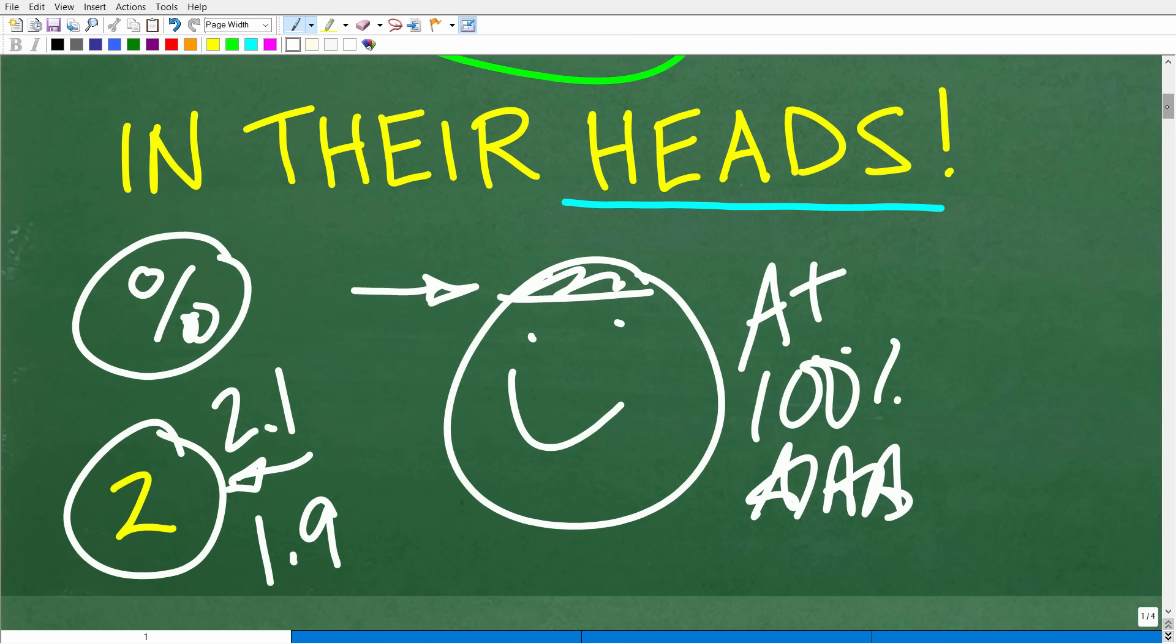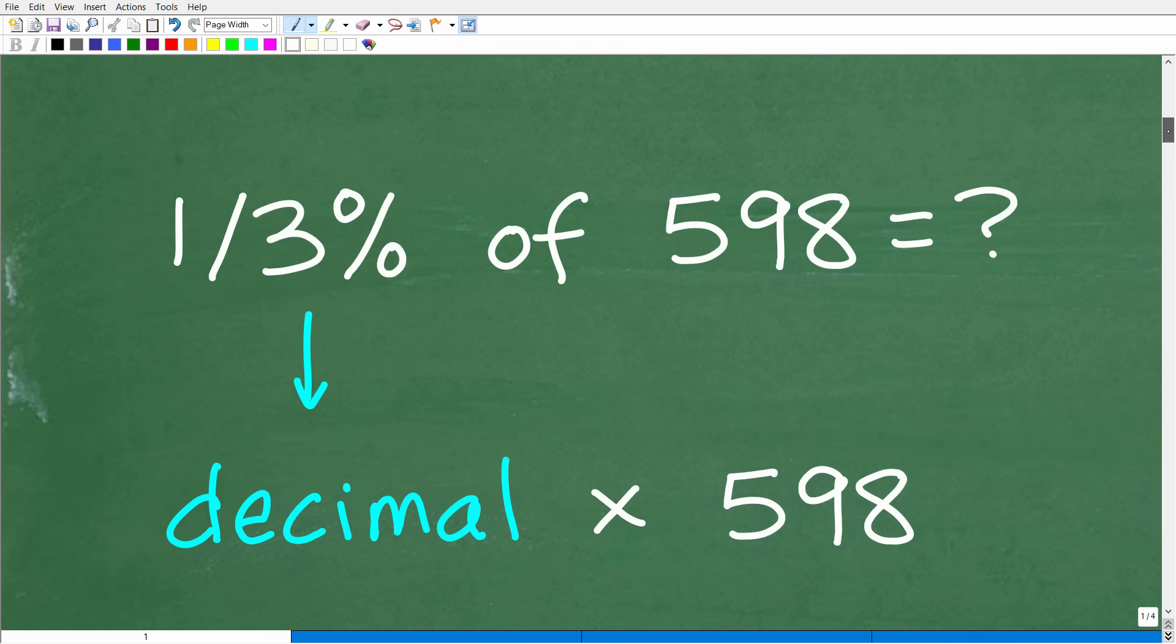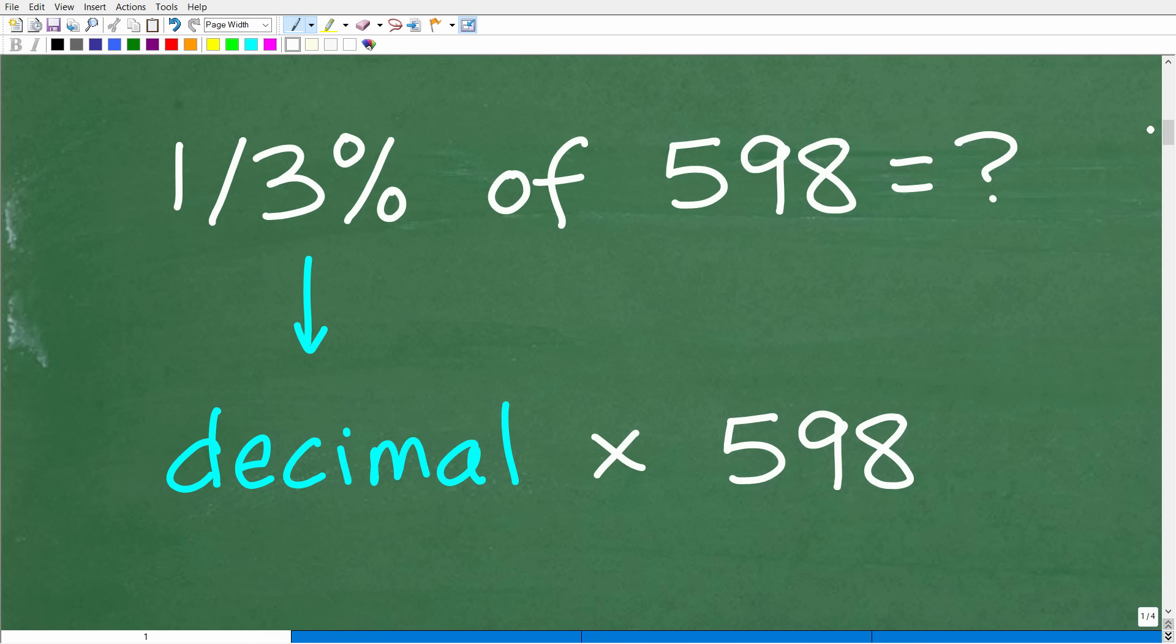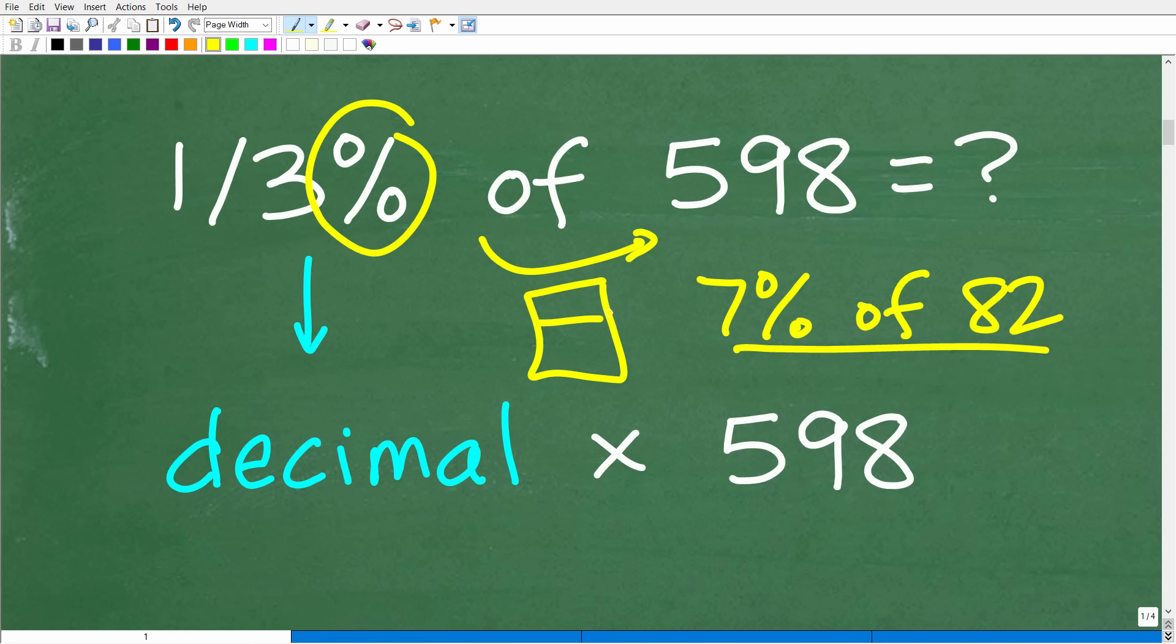All right. So let's go ahead and get into how to do this. This is not that difficult. But before we look at how to do this using mental math, let's just kind of review how we would do this problem using a calculator. So what we're doing is we're finding the percent of a number, basically like this kind of question here, 7% of 82. So how would we do this? And let's suppose we did have a calculator available.